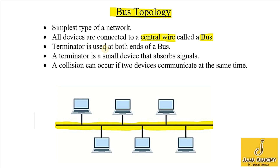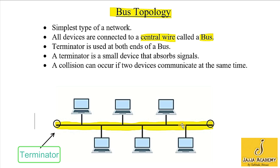A terminator is used at both ends of a bus — one end and the other end. So a terminator is fixed at both ends of the bus. It is a small device that absorbs signals.